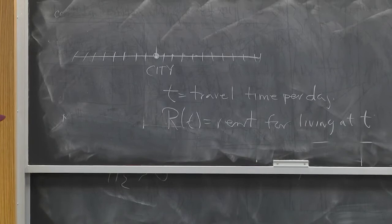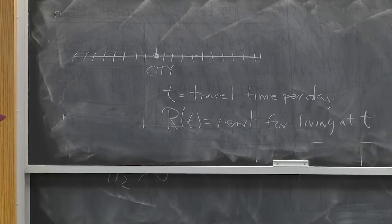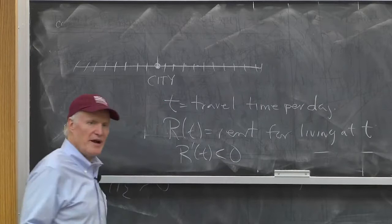So presumably we would think R prime of T ought to be less than zero. That is, rents ought to go down if you have to travel further. That's going to be kind of a simple implication.